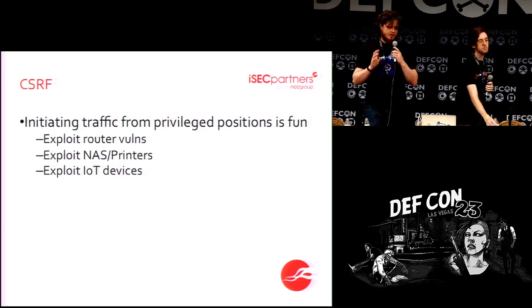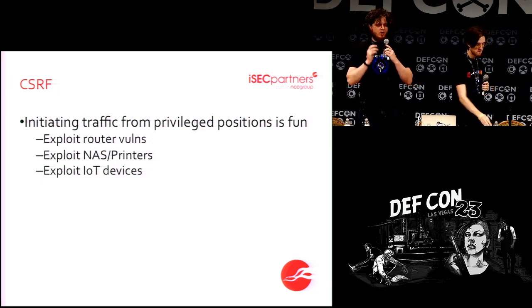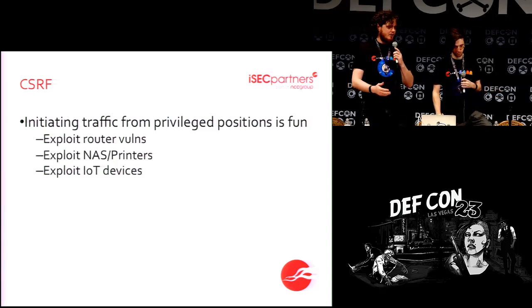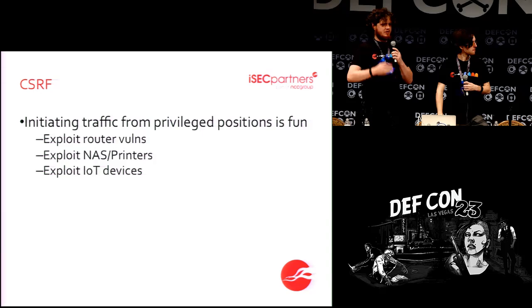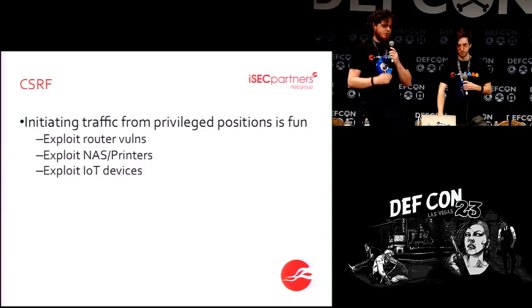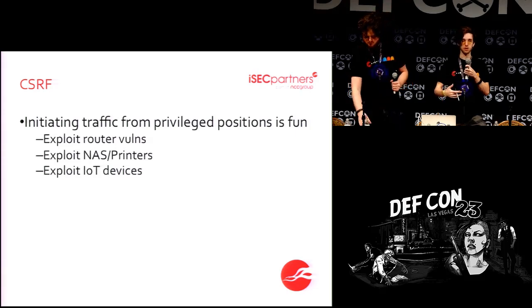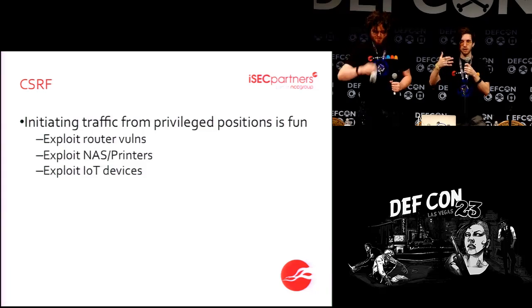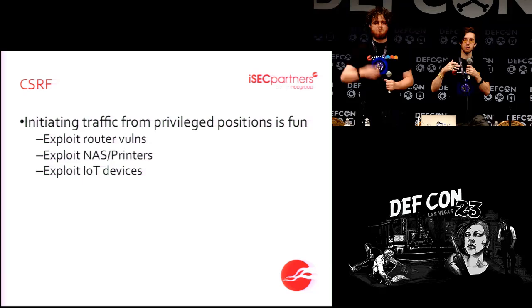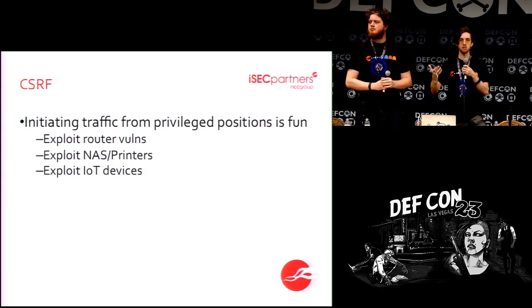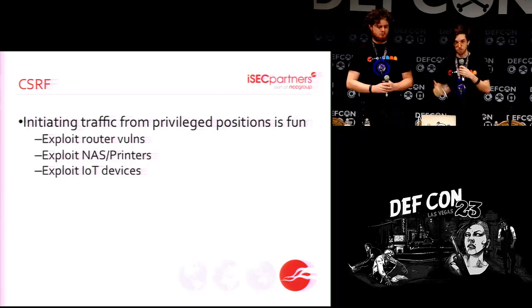Cross-site request forgery: a lot of people are opening these documents from a privileged network position — inside your corporate firewall or on your home network. This means the person who crafted the document is able to access these resources in a limited way, for instance browsing to your router's shutdown URL. They can send a CSRF attack from a privileged network position to a vulnerable device, as I discussed with the torrent file. And sometimes the parser will pop open your default browser, and if you have an authenticated session with any site in that browser, the attack will ride on those credentials.